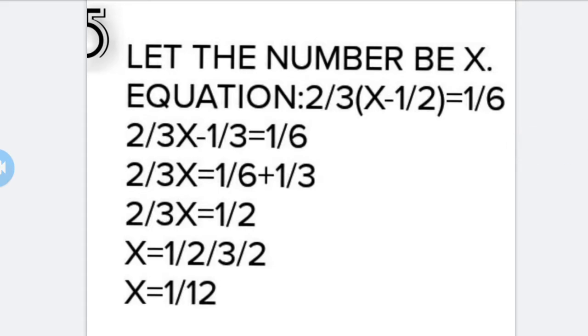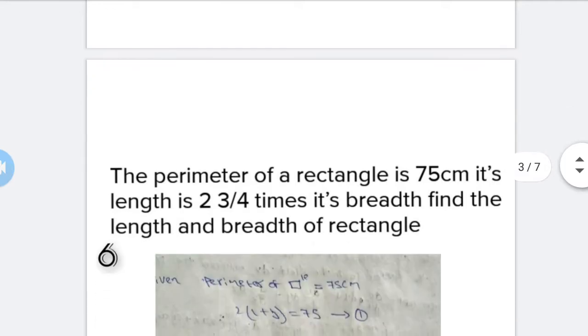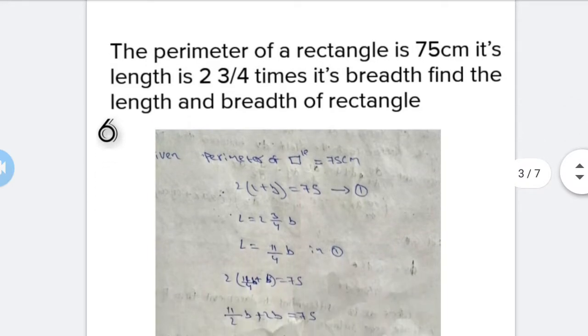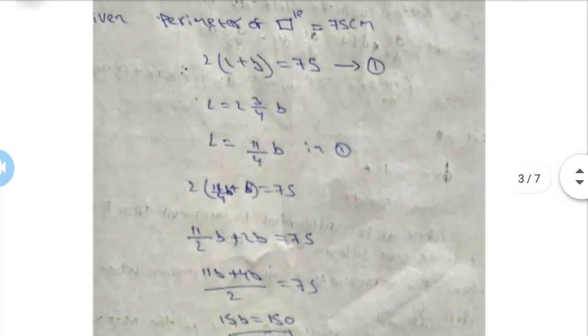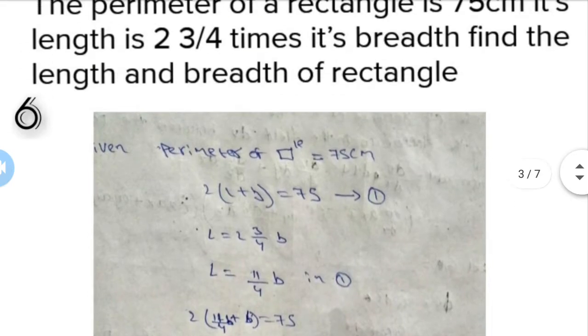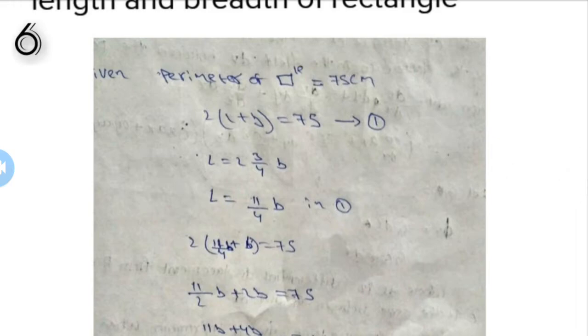Now move on to the next question. The perimeter of a rectangle is 75. Its length is 2 and 3/4 times its breadth. Find the length and breadth of the rectangle. The perimeter of a rectangle is 2 times (l plus b) equal to 75 cm. So 2(l plus b) equals 75.